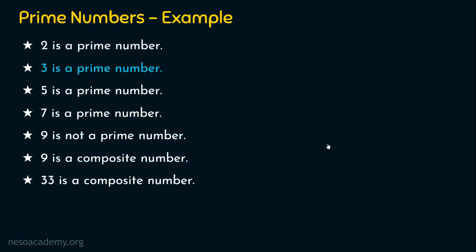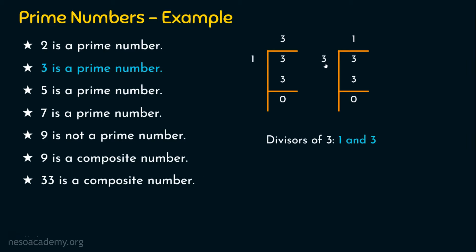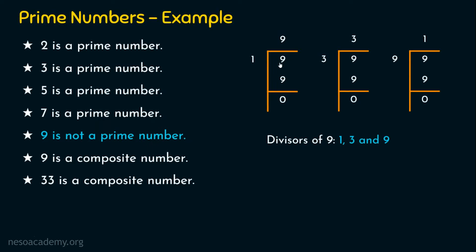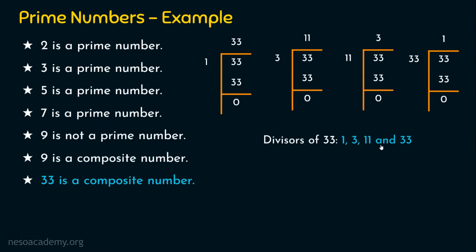Similarly, 3 is a prime number because 3 can be divided by 1 and 3 only — the divisors for 3 are 1 and 3. 5 is also a prime number because 5 can be divided by 1 and 5 only with no other factors. 7 is also a prime number. 9 is not a prime number because 9 can be divided by 1, 3, and 9 — that's 3 divisors, not exactly 2. So 9 is a composite number.